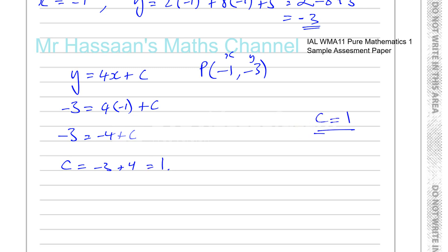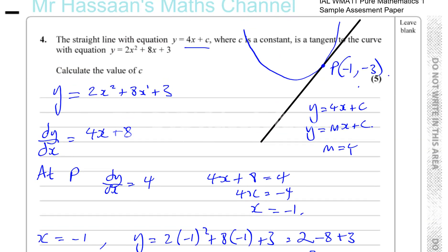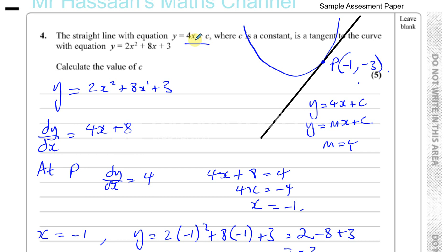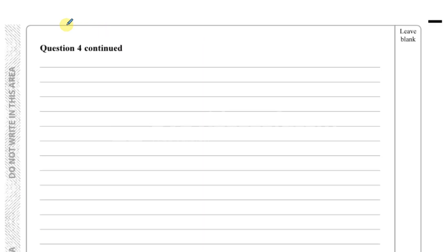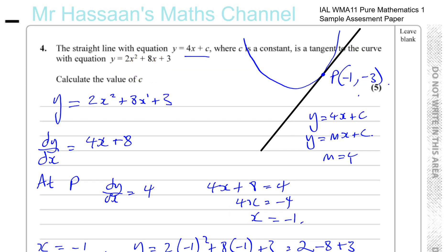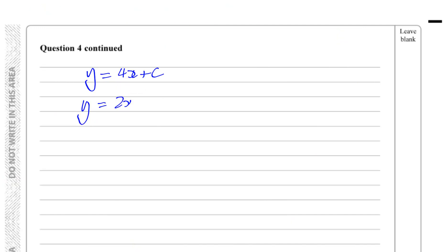That's the first method: using the fact that for a quadratic, the tangent touches at exactly the point where the curve's gradient equals the line's gradient. The second method is to recognise that if the line is a tangent, it intersects the curve at only one point, meaning solving the two equations simultaneously gives exactly one solution. We set y equals 4x plus c equal to y equals 2x squared plus 8x plus 3.